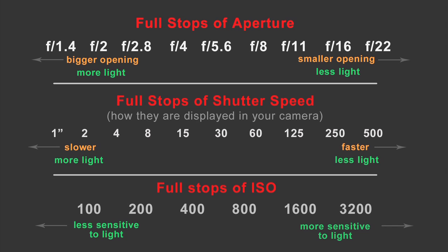Here's a quick review: the bigger the aperture opening, the more light we get; the slower the shutter speed, the more light we get; and the higher the ISO, the more sensitive the sensor is, so the more light we get. For aperture and ISO, this applies to both ambient light exposure and flash exposure.